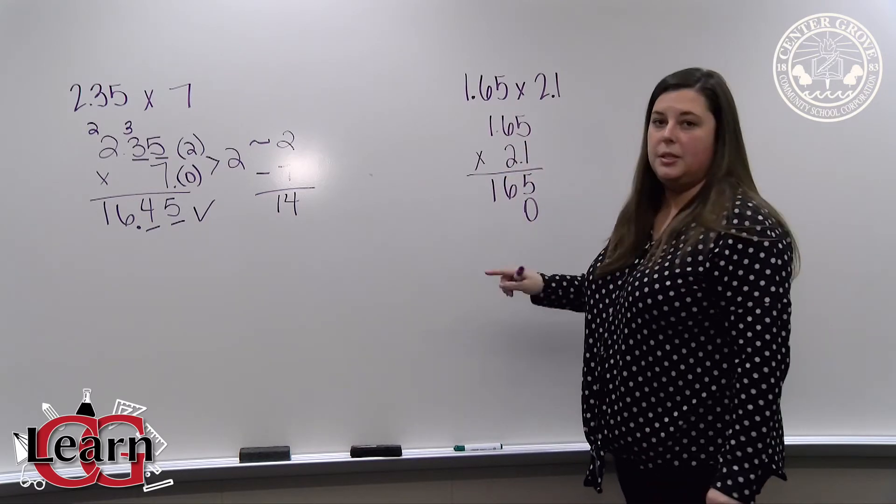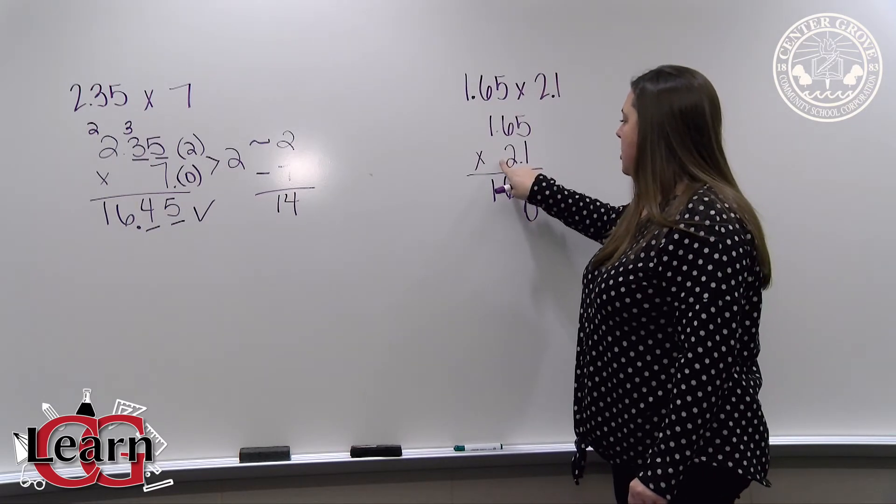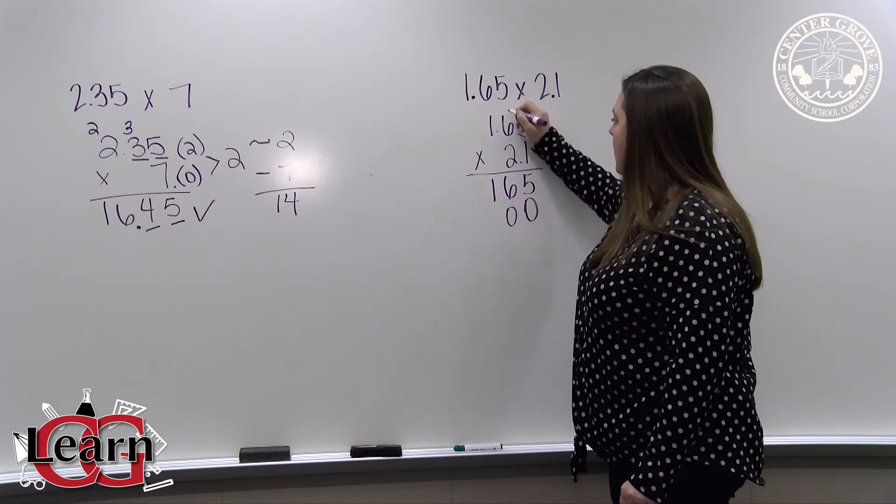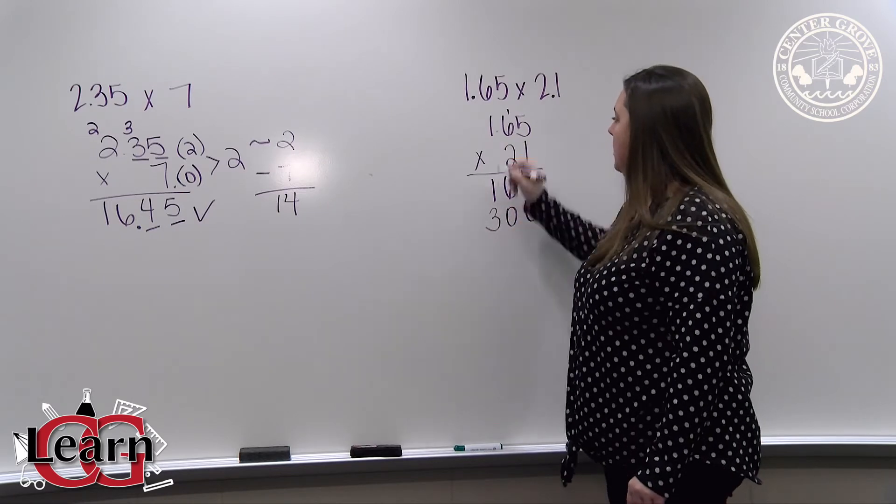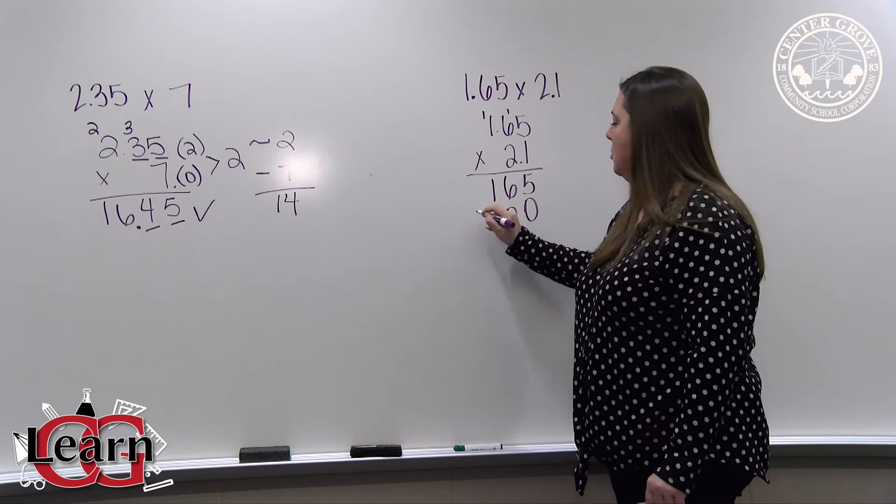We insert a 0 as a placeholder because 2 is technically 20. So then we finish our second partial product. 2 times 5 is 10, carry the 1. 2 times 6 is 12, plus 1 more is 13, carry the 1. 2 times 1 is 2, plus 1 more is 3.